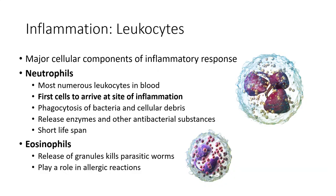The major cellular components of the inflammatory response are the leukocytes, or white blood cells. The most numerous white blood cells in the blood are neutrophils. Neutrophils are our first responders — like EMTs — the first to arrive at the site of inflammation. Their main job is to phagocytize, or eat up, bacteria and cellular debris. They also release enzymes and other antibacterial substances to help prevent further growth and destruction by microbes. Because these enzymes are so powerful, neutrophils have a short lifespan.